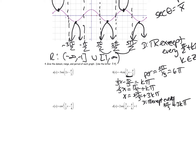For the range, coming out of cosecant the typical range is negative infinity to negative one, union one to infinity. Following the order of operations, I multiply by negative four, so the range will be negative infinity to negative four, union four to infinity.